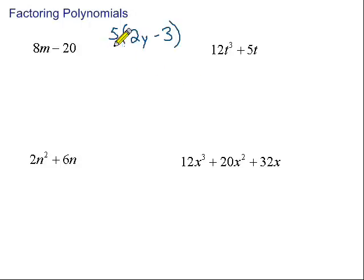This problem right here, we have 5 times the quantity 2y minus 3. To get rid of those parentheses, we're going to distribute the 5 through. So, we're going to multiply 5 times 2y and 5 times minus 3. So, 5 times 2y would give us 10y. And then 5 times minus 3 would give us minus 15.